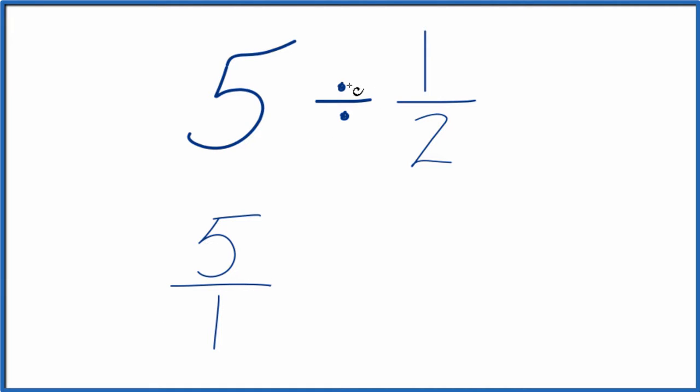Instead of division, let's multiply by the reciprocal of 1 half. To take the reciprocal of 1 half, we just move the 1 here, the 2 here, and we end up with 2 over 1.